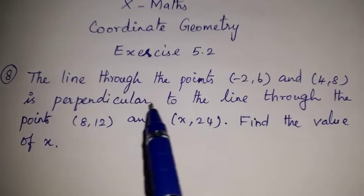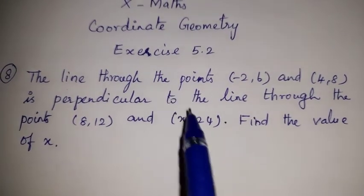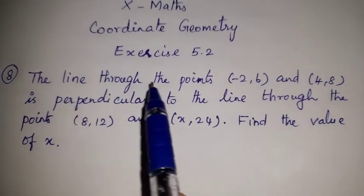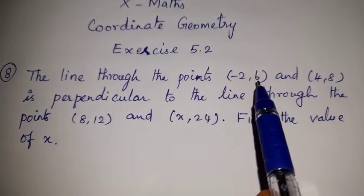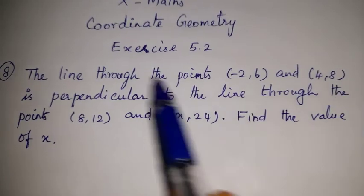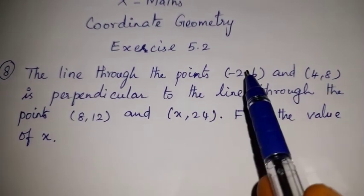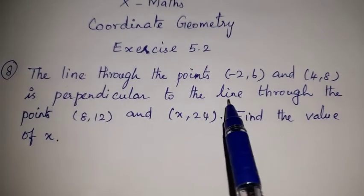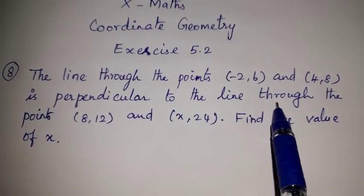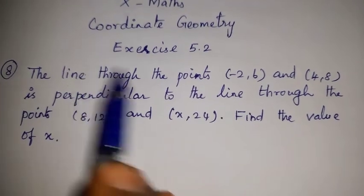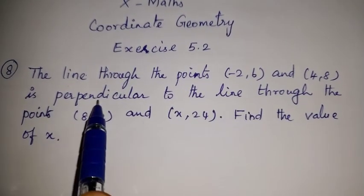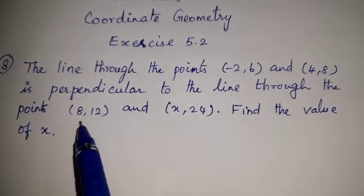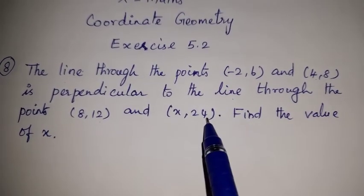So, perpendicular concept — follow up. Two lines perpendicular: the 1st line through the points minus 2, 6 and 4, 8 is perpendicular to the second line through the points 8, 12 and x, 24.